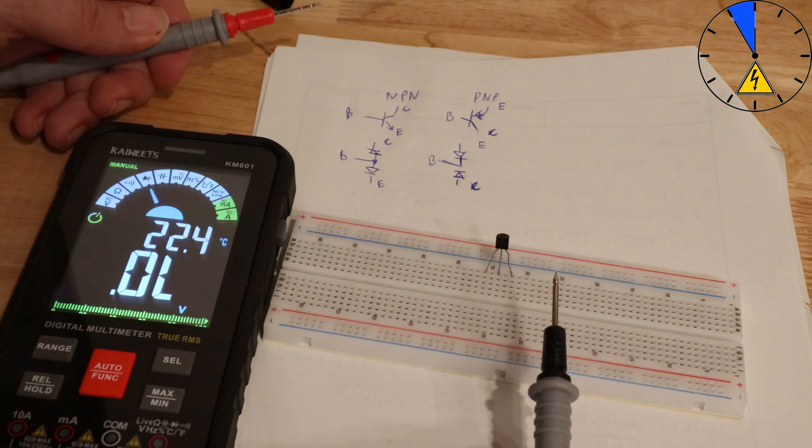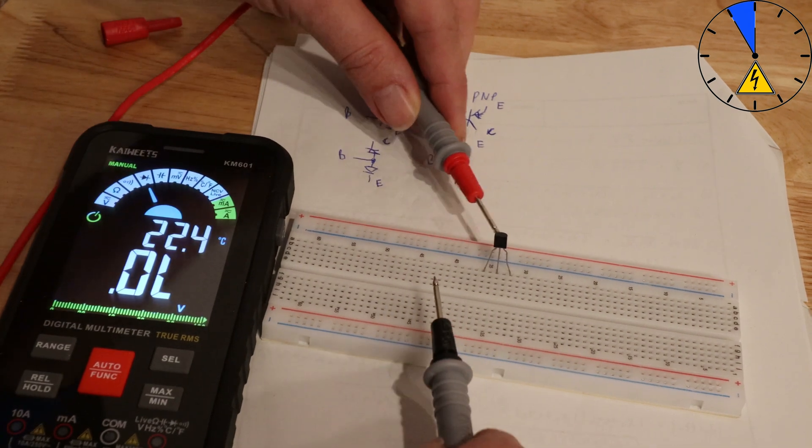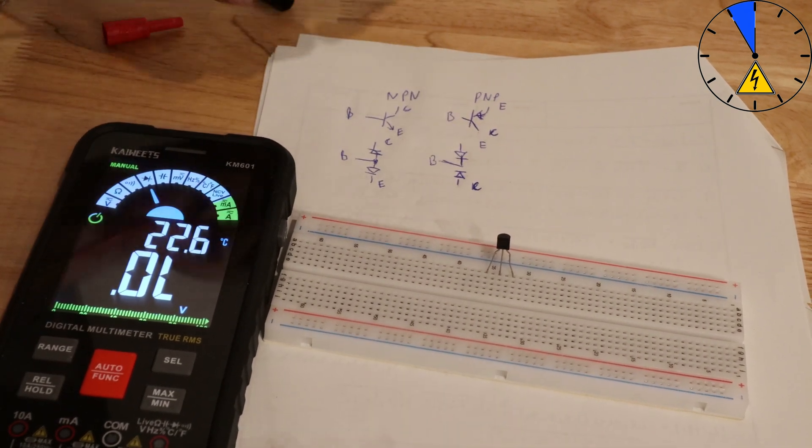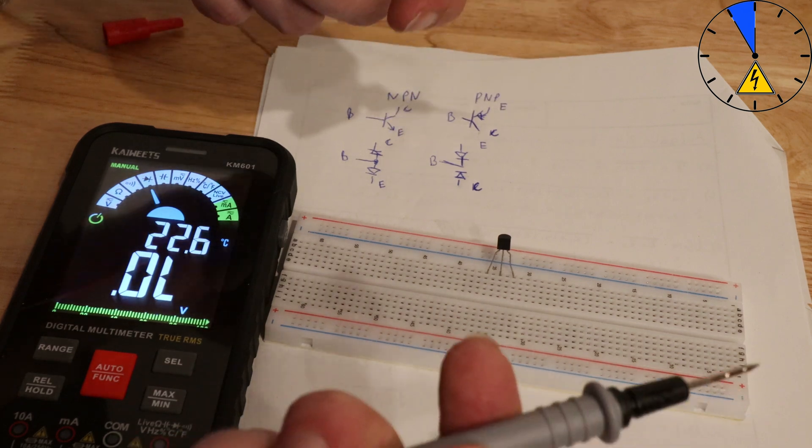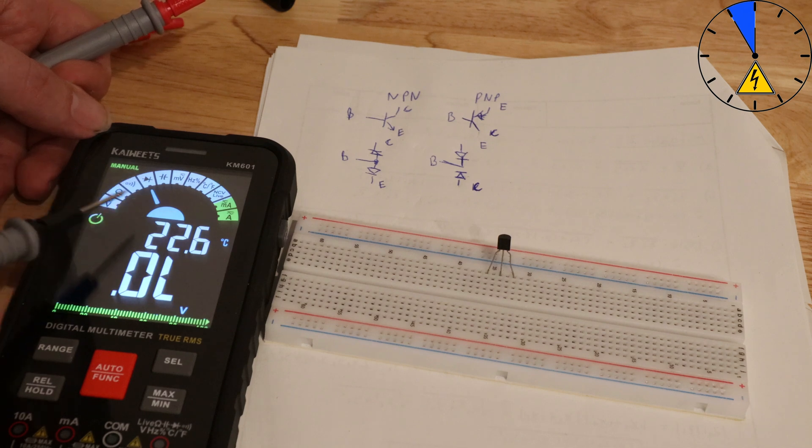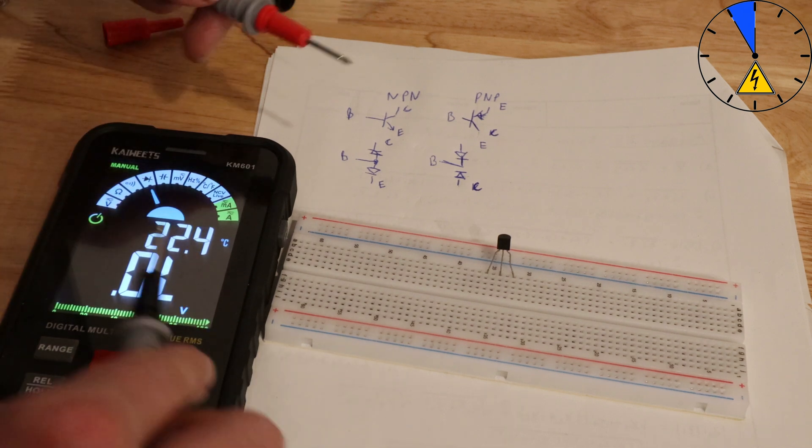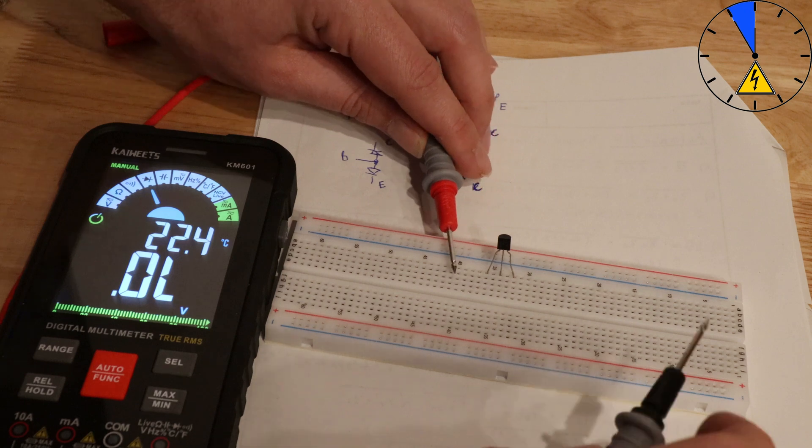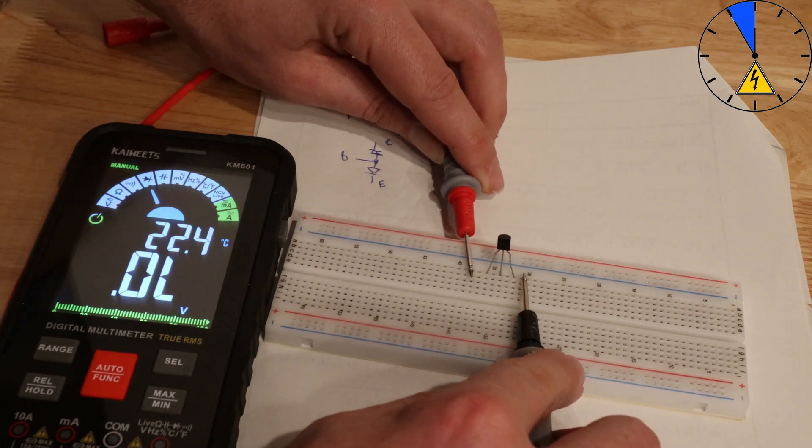First of all, where is the base? I have my multimeter with the diode symbol, and now I am measuring pin to pin.